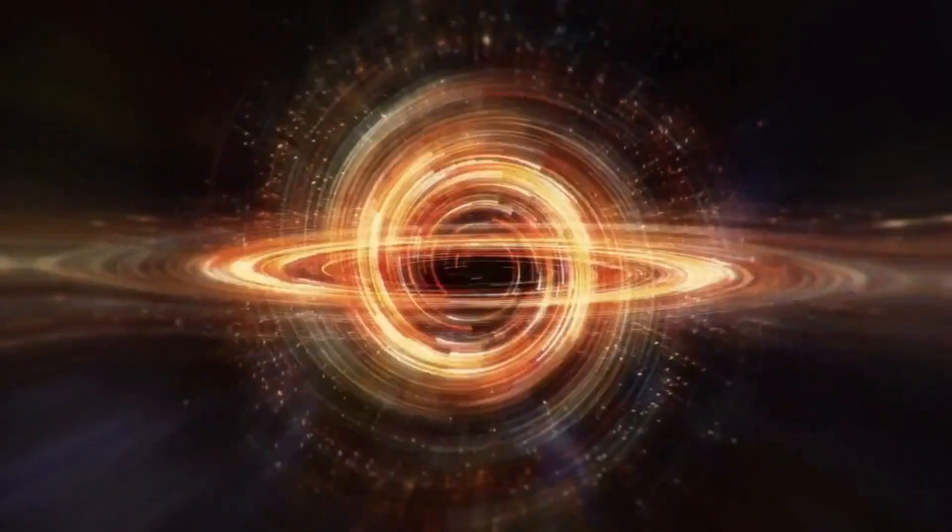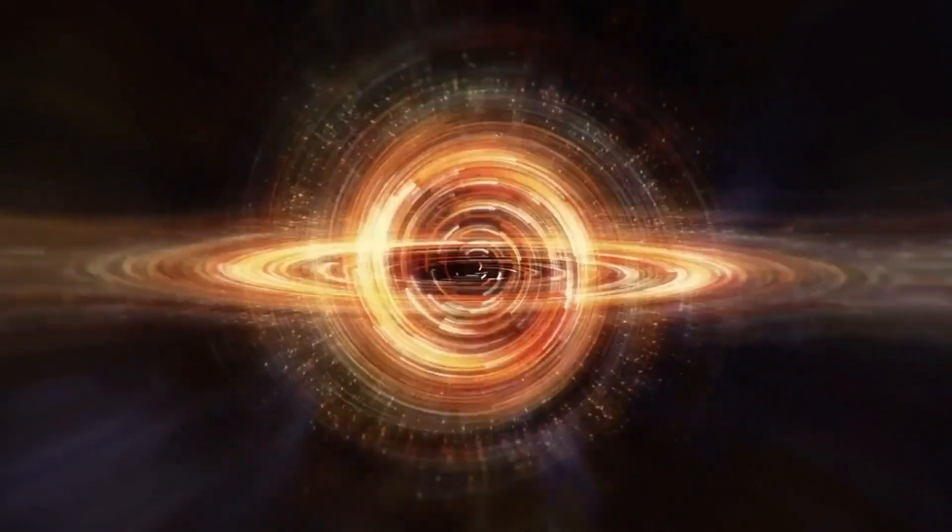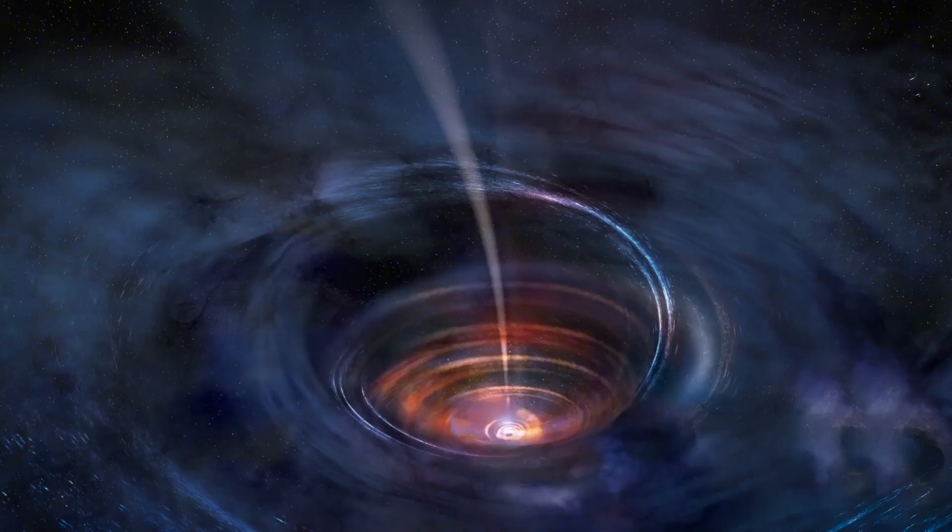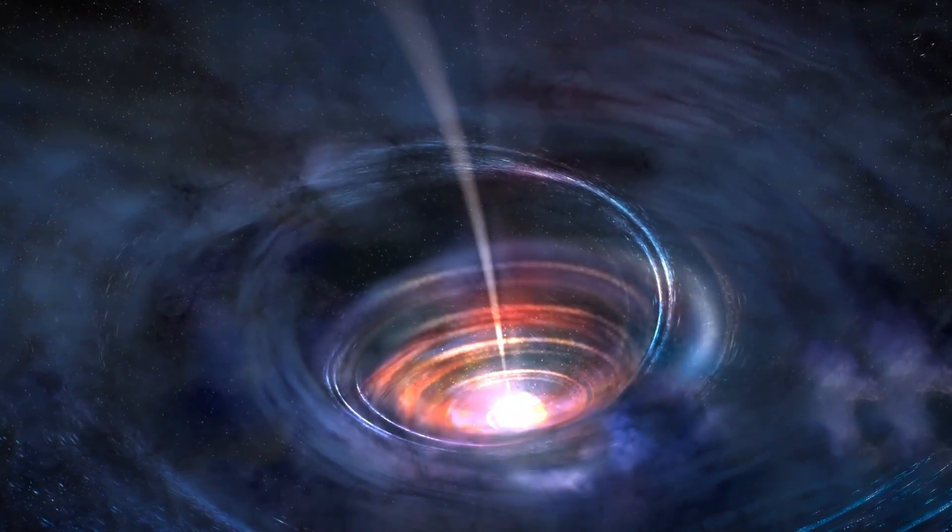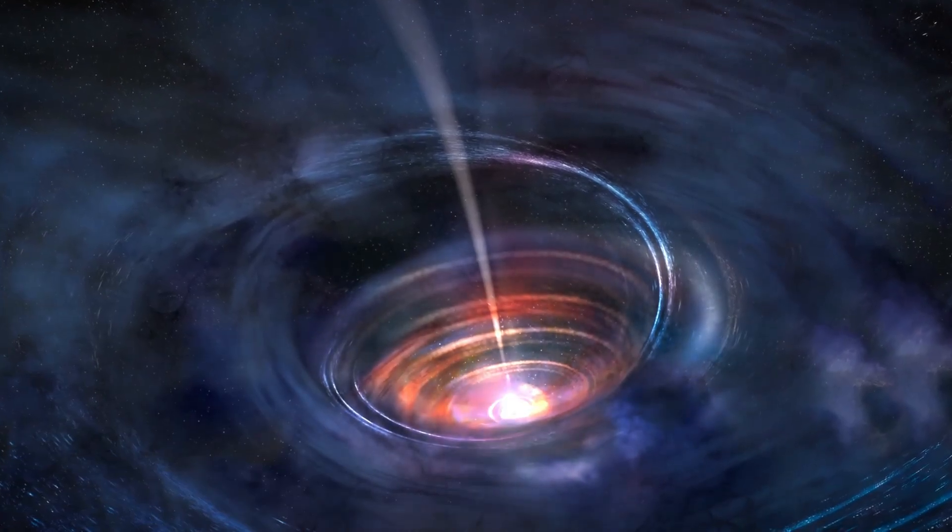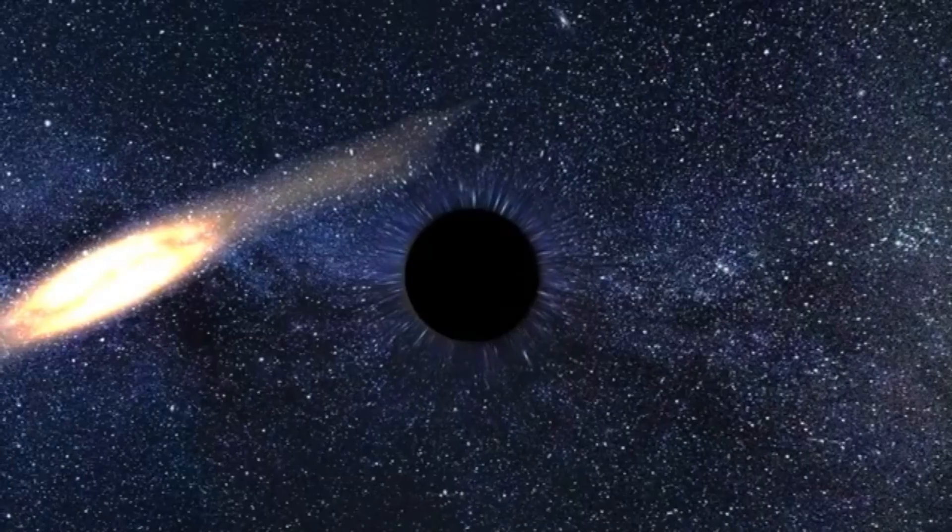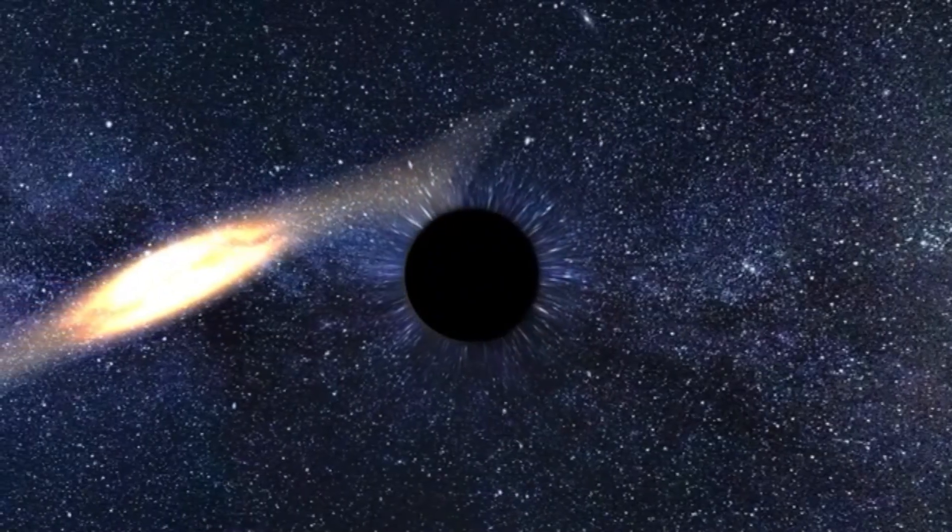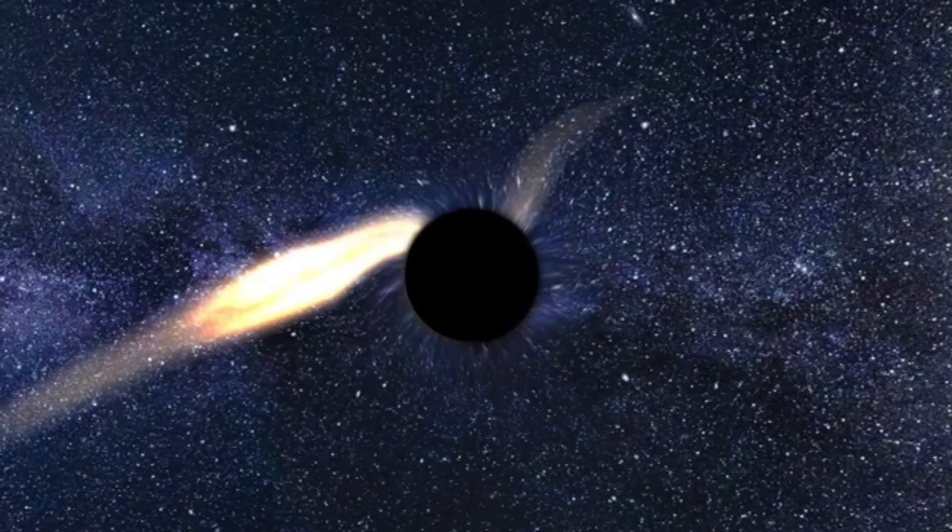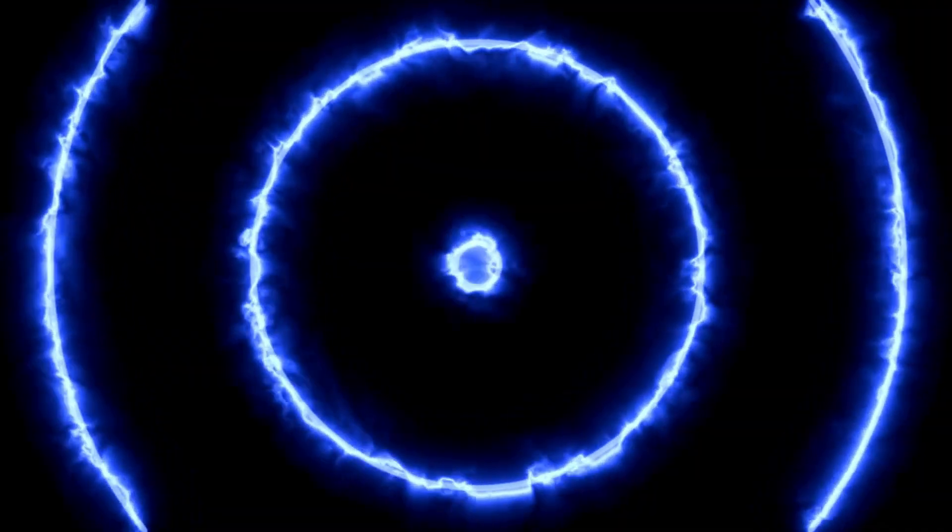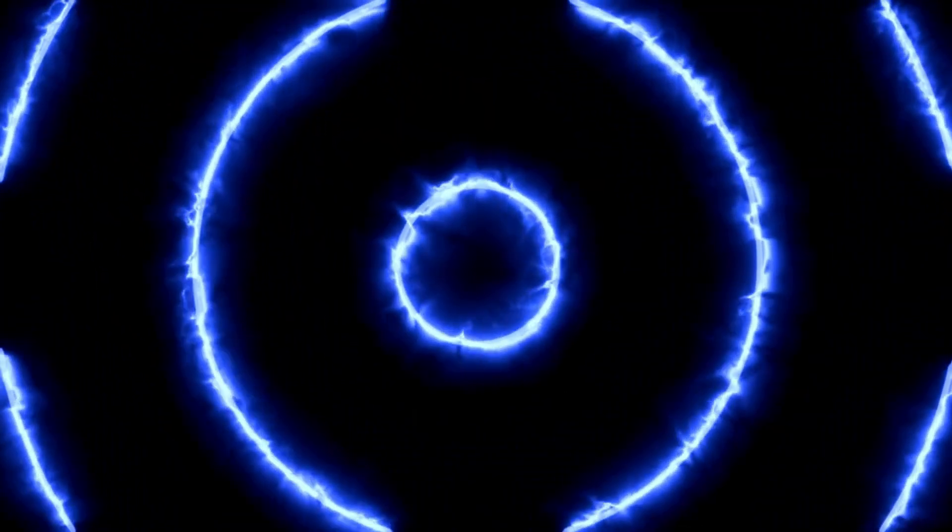Detecting black holes is no simple task since they radiate no light. However, researchers have tracked down ways to decipher their presence by observing their effects on nearby matter. For instance, if a black hole passes through a cloud of interstellar matter, it'll pull matter towards it in a process called accretion. Moreover, when a normal star gets too close to a black hole, it can get destroyed, emitting x-rays as it does so.